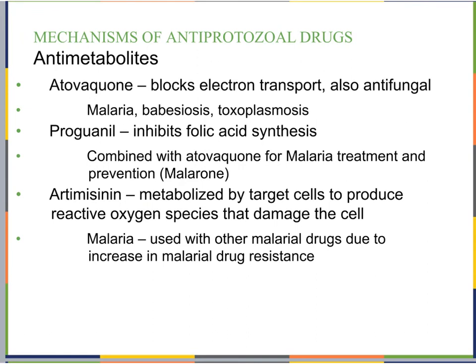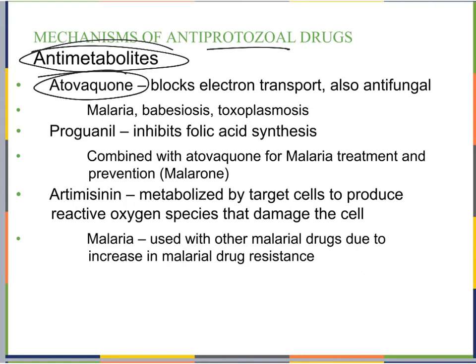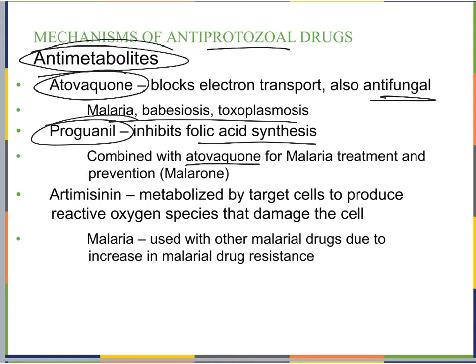Moving into anti-protozoal drugs, we have anti-metabolites. Atovaquone blocks electron transport and is used for protozoa but is also antifungal. Proguanil inhibits folic acid synthesis — similar to antibiotics we discussed — but works on protozoa. These two can be combined for malaria treatment and prevention; this combination is the pharmaceutical Malarone.